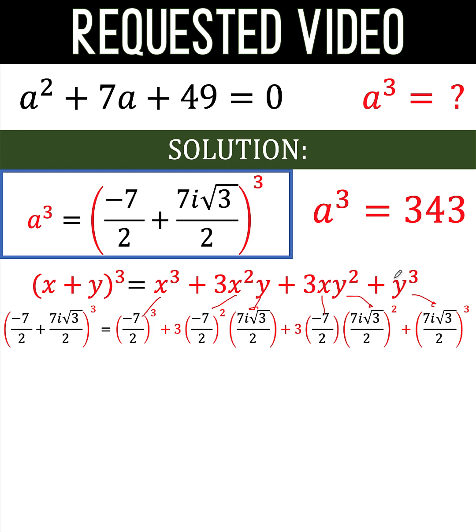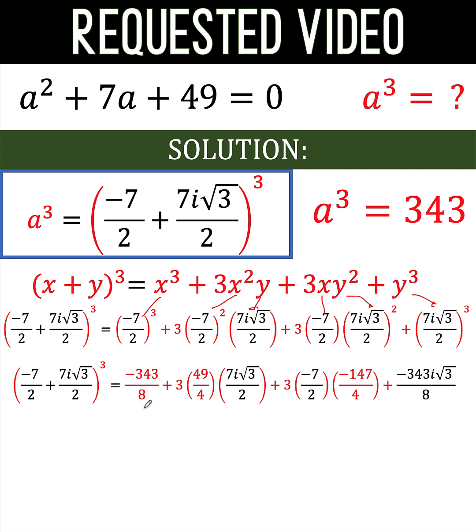Here, exponent 2. Here, exponent 2. Exponent 3. Simplifying, this first term becomes negative 343 over 8. This part here, negative 7 times negative 7 becomes positive 49. 2 times 2 is 4. Copy the rest. And this part here,